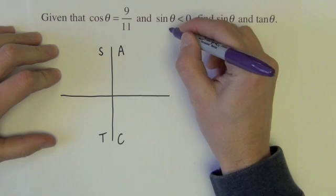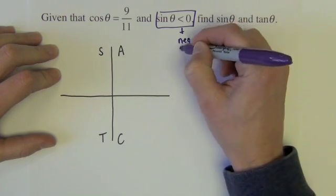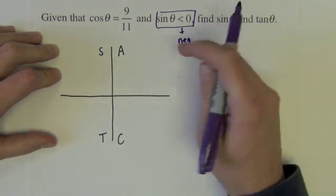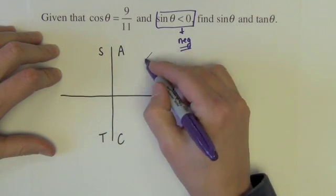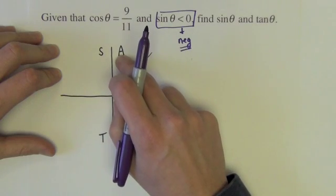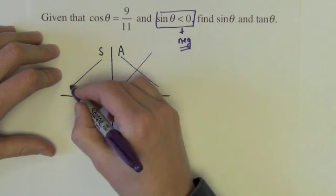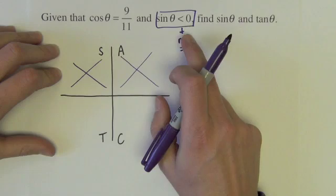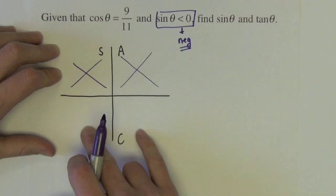So first we have that sine theta is less than zero means sine theta is negative. Well if sine is negative then it can't be in the first quadrant because all trig functions are positive here and it can't be in the second quadrant because the S stands for sine, sine is positive here. So this bit right here, sine is less than zero, narrows me down to the bottom two quadrants.